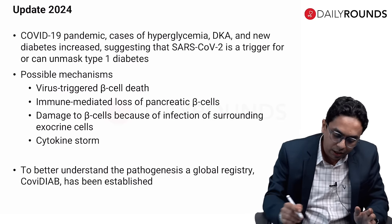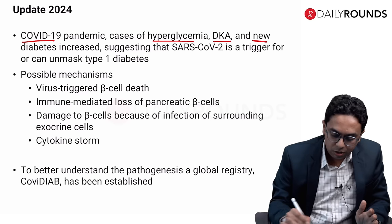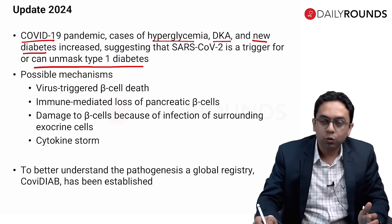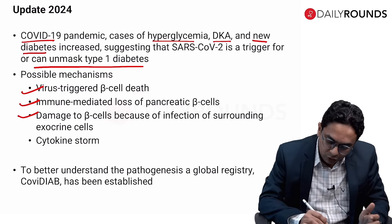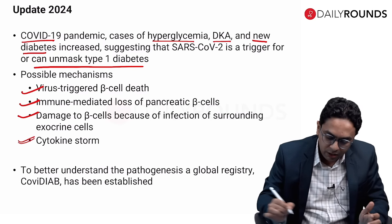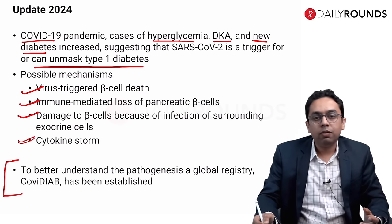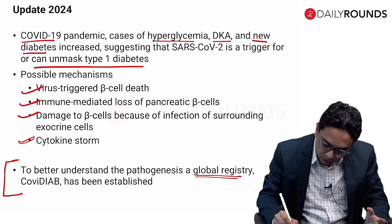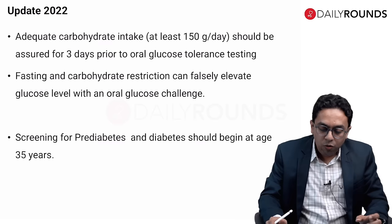Regarding COVID-19: the pandemic led to increased cases of hyperglycemia and new-onset diabetes, suggesting this virus can unmask type 1 diabetes. Probable mechanisms include virus-triggered beta cell death, immune-mediated loss of pancreatic beta cells, damage from infection to surrounding exocrine cells, and cytokine storm. There is a global registry called CoviDIAB. More research is needed to better understand the pathogenesis.